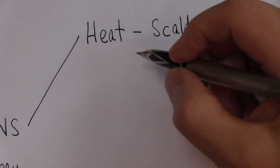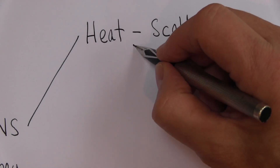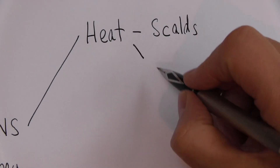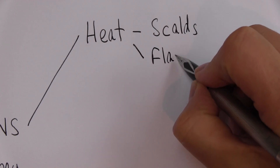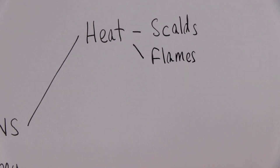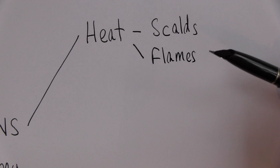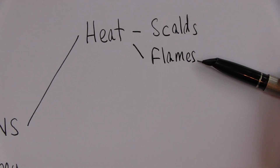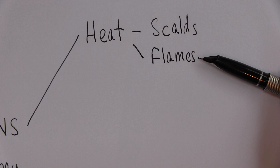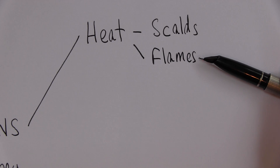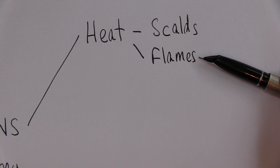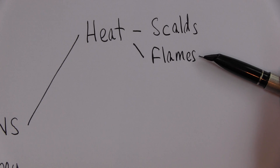Heat can also cause burns via the mechanism of flames. This is a more common cause of injury in older children as well as adults. It can be from burning objects or what we see quite commonly in A&E — different sorts of fuels, such as lighter fuel or petrol burning that causes flames.